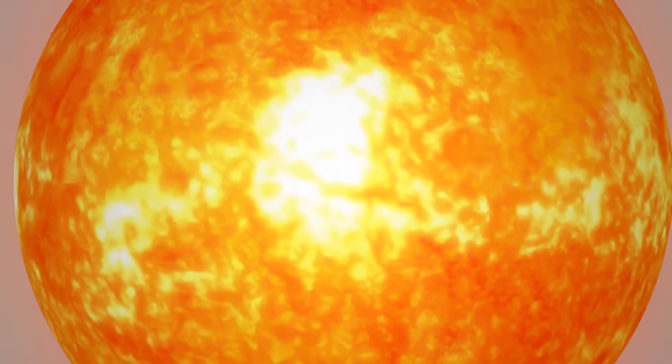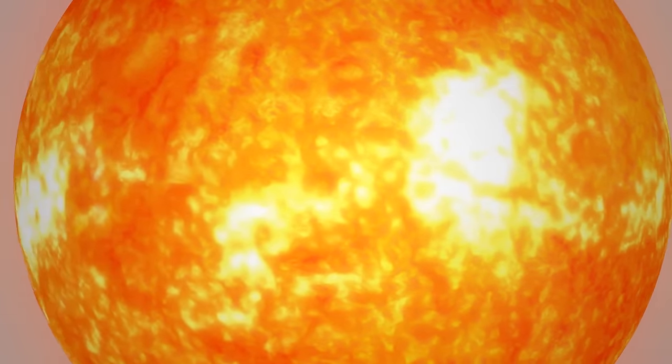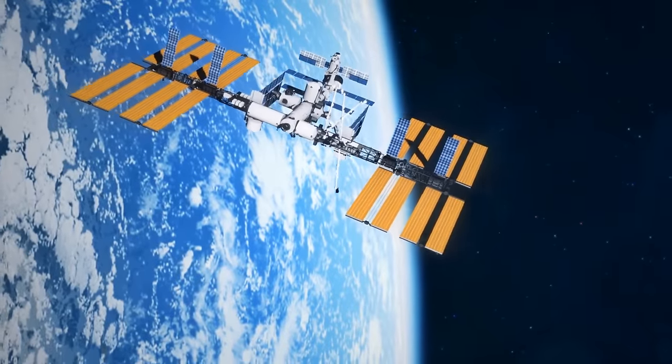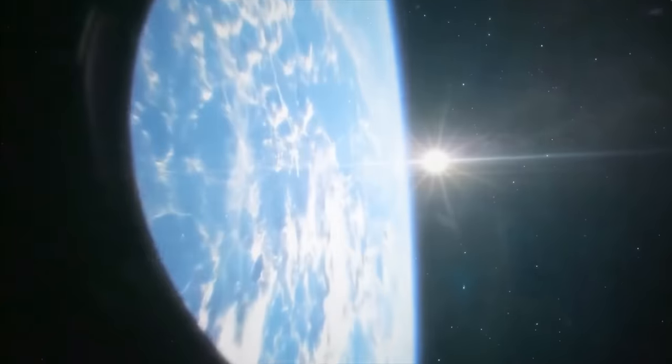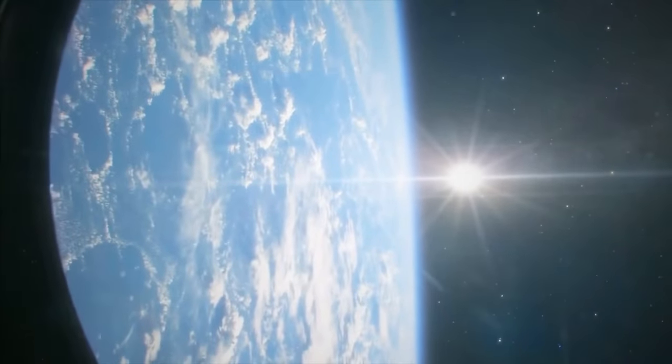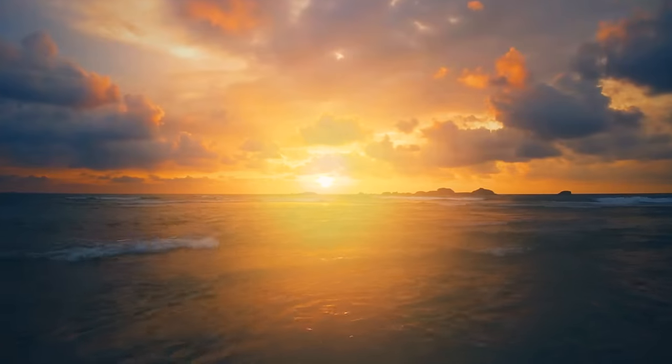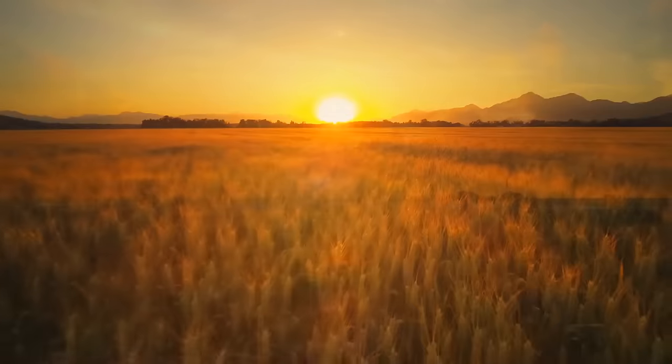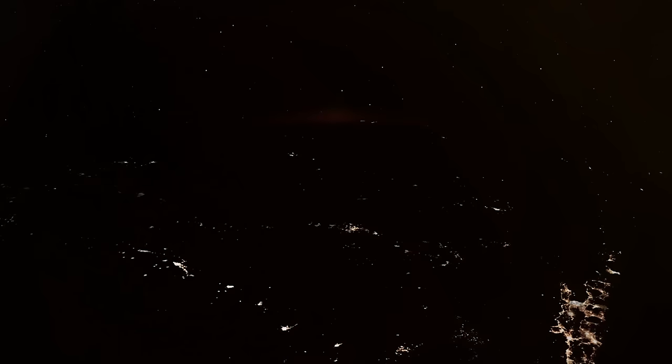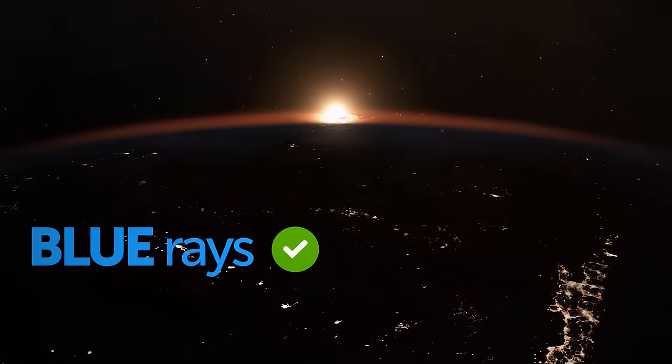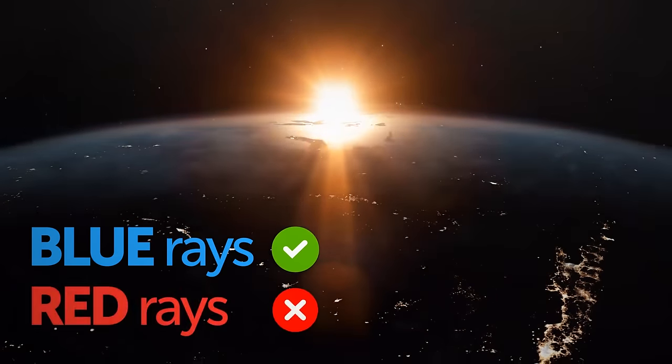Our eyes are unable to perceive the concept of all colors at the same time. So their combination seems white to us. Wait, you might say. Why white? Isn't the sun yellow? Yep, it's yellow too. But please don't stare at the sun just to make sure.